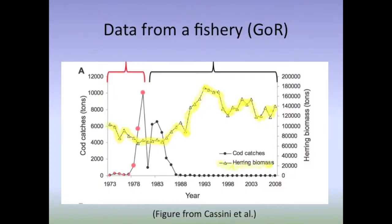Here is data from a fishery that was set up in the Gulf of Riga. The black line effectively traces the cod population in the gulf, and the yellow one traces the herring. Under the red bracket, we see that as the cod increase in the gulf, herring decrease. Under the black bracket, we see that a falling cod population makes herring more abundant in the gulf.